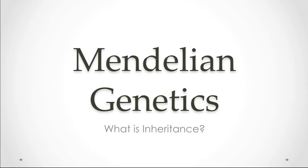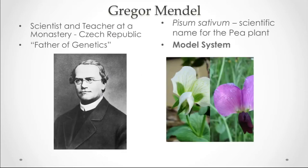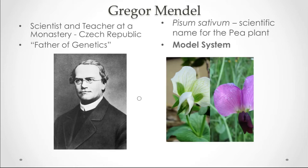Mendelian genetics is named after this man pictured here, Gregor Mendel, who was a monk, scientist, and teacher living in a monastery in the 1800s. We refer to him today as the father of genetics, though he was not recognized for his work during his lifetime. To the right you can see a pea plant in two forms — a white flowering and a purple or violet flowering pea plant — which were what Mendel used as his model system.